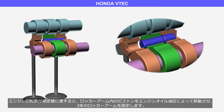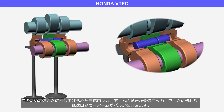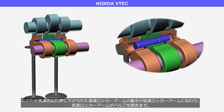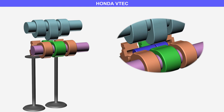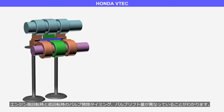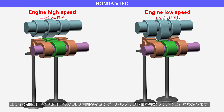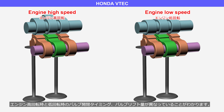Once the engine speed reaches a specified value, the piston in the rocker arm is moved by engine oil pressure and locks the three rocker arms as a unit. This allows the movement of the high-speed rocker arm, which is pressed down by the high-speed cam, to transfer to the low-speed rocker arms, and then the low-speed rocker arms open the valves. You can observe that the valve opening and closing timings, as well as the valve lift amounts, are different between high and low engine speeds.